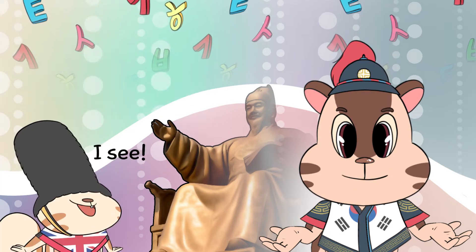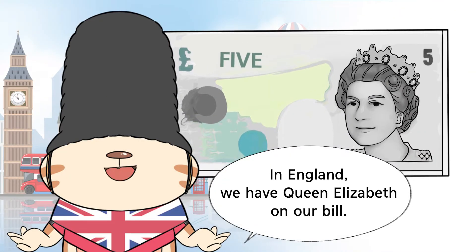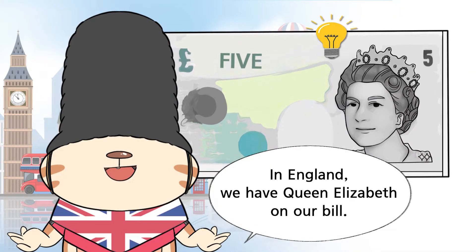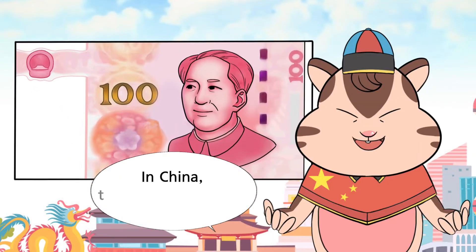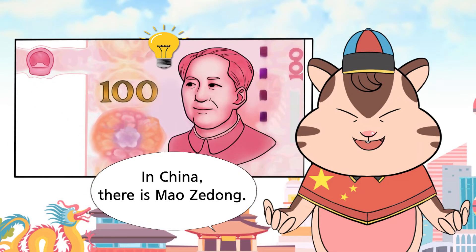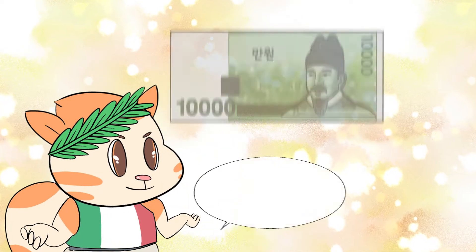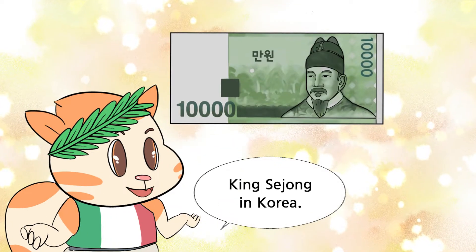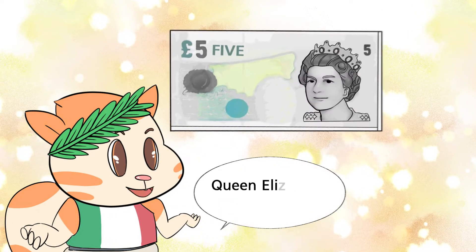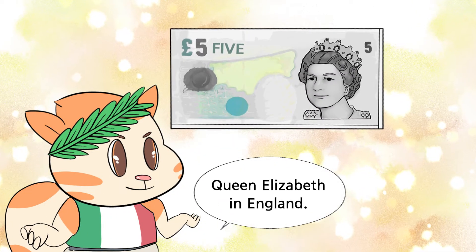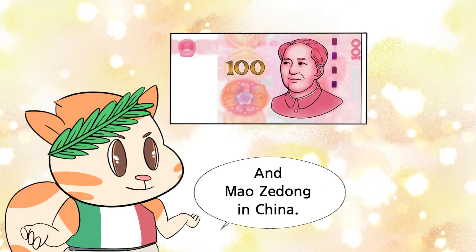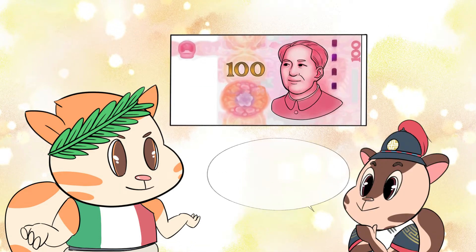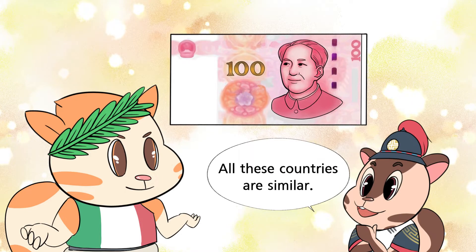I see. In England, we have Queen Elizabeth on our bill. In China, there is Mao Zedong. King Sejong in Korea, Queen Elizabeth in England, and Mao Zedong in China. All these countries are similar.